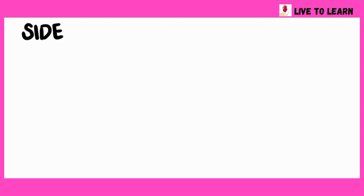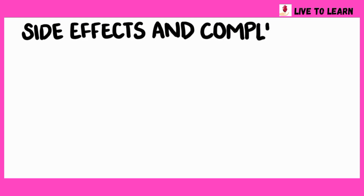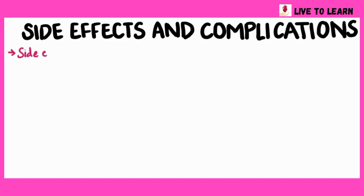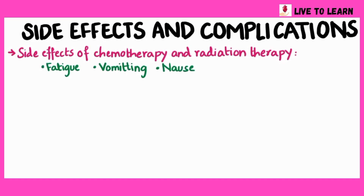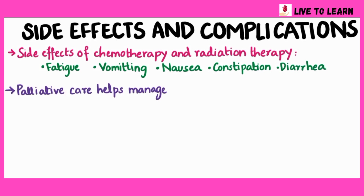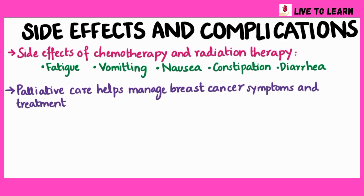The treatments and procedures for breast cancer have their own side effects and complications. The side effects of chemotherapy and radiation therapy include fatigue, vomiting, nausea, constipation, diarrhea, and others. Since people react differently to breast cancer treatments, palliative care helps manage breast cancer symptoms and treatment side effects so you are as comfortable as possible as you go through the treatment.